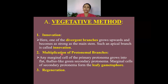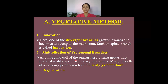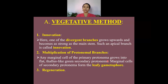The second method is multiplication of protonemal branches. The protonema is the initial gametophytic structure formed after germination of spores. Sometimes the marginal cells of the primary protonema grow into thallus-like green secondary protonema, and the marginal cells of the secondary protonema, after detachment, can produce leafy gametophores.